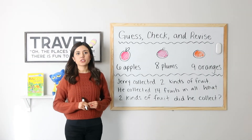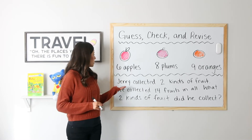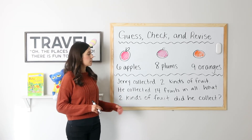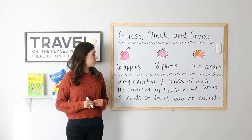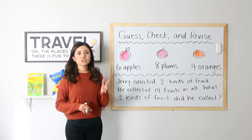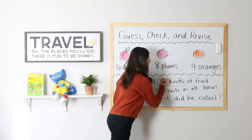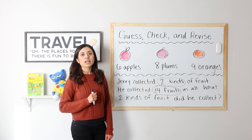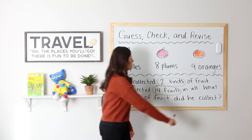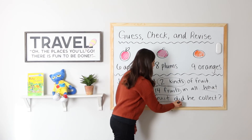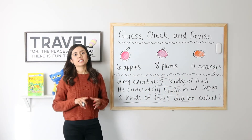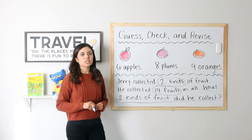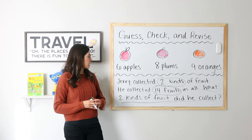Very good. Example number two. Let's go ahead and start by reading our problem. Jerry collected two kinds of fruit. He collected 14 fruits in all. What kinds of fruit did he collect? Second, we will go ahead and circle what we already know. I know that Jerry collected 14 fruits in all. Step three, underline what we want to find out. We want to know what two kinds of fruit did he collect? The fourth step is to guess, check, and revise. I have six apples, eight plums, and nine oranges. I want to see what two fruits I can put together to give me a total of 14.